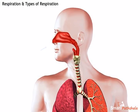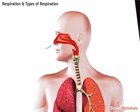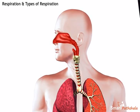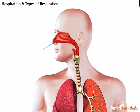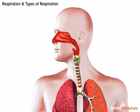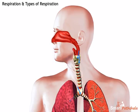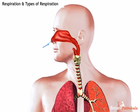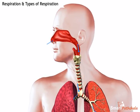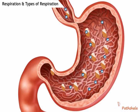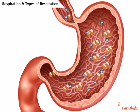Respiration is divided into three steps. Breathing of air is the first step in respiration — we take in oxygen during breathing. Transportation of oxygen to various organs is the second step. The third step is the breakdown of food by oxygen to release energy.